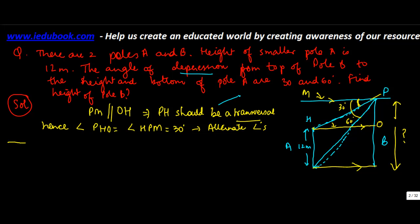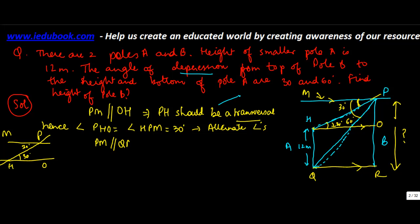To see this clearly: PM is the horizontal, OH is the horizontal at the top of pole A. The transversal cuts them, making this angle 30 degrees, so the alternate angle is also 30 degrees. Similarly, PM is parallel to QR (the base line), so angle PQR equals angle QPM equals 60 degrees — again alternate angles.